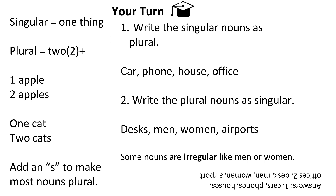Now it's your turn. I want you to write the singular nouns as plural: car, phone, house, office. And then write the plural nouns as singular: desks, men, women, airports. Notice that 'men' and 'women' do not have an 's.' This means that they are irregular nouns.